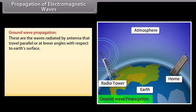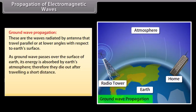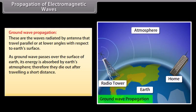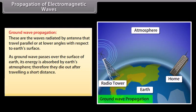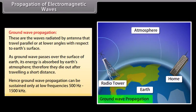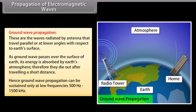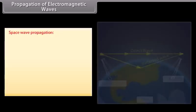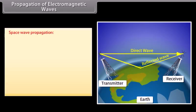Ground wave propagation: these are waves radiated by an antenna that travel parallel to or at lower angles with respect to Earth's surface. As a ground wave passes over the surface of Earth, its energy is absorbed by Earth's atmosphere; therefore they die out after traveling a short distance. Ground wave propagation can be sustained only at low frequencies: 500 Hz to 1500 kHz.